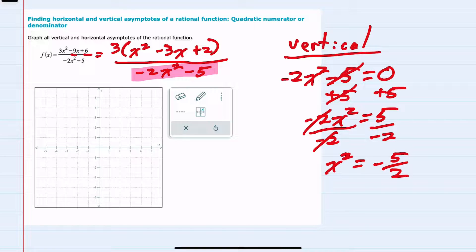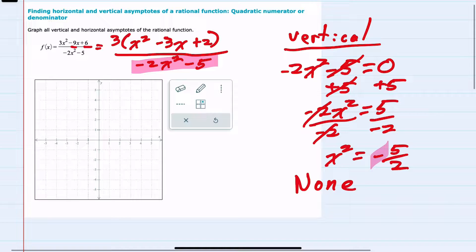Even before trying to take the square root of both sides or anything to continue solving for x, I can see here that there are no real numbers that I could square and get a negative value. So this denominator, -2x² - 5, will never be 0, meaning I won't have a vertical asymptote. So for vertical asymptotes, I can just say none, and I can move to horizontal asymptotes.